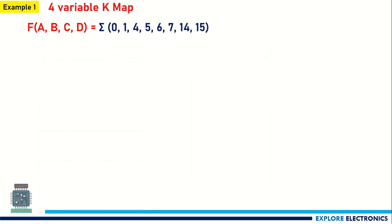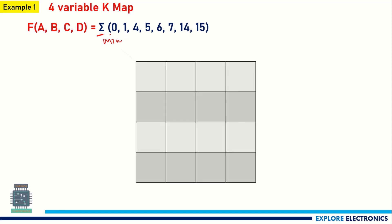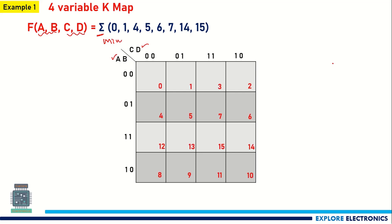Now let us get into the example. We have f(A, B, C, D) equal to the summation of given minterms. For the K-map, we take A and B as the two row variables and C and D as the two column variables — this is how we arrange the four variables in a four-variable K-map.